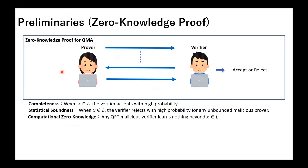In this talk, I will consider zero-knowledge proof for QMA. Here, roughly speaking, QMA is a quantum version of NP. In the zero-knowledge proof for QMA, the following three properties hold.